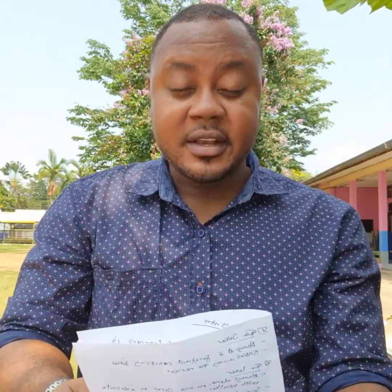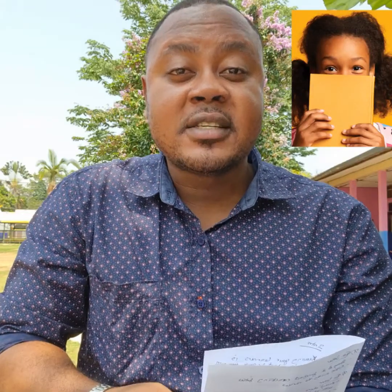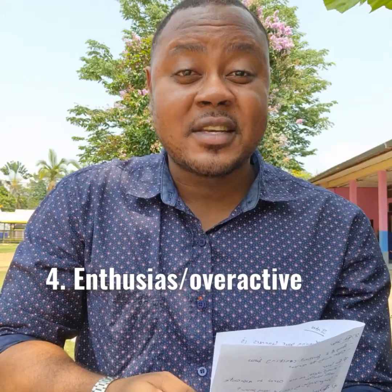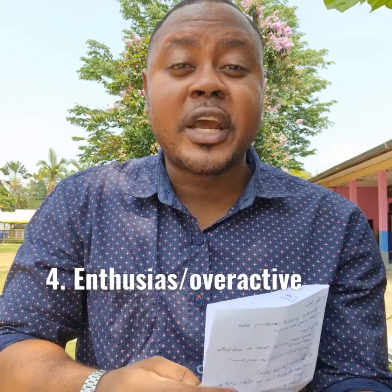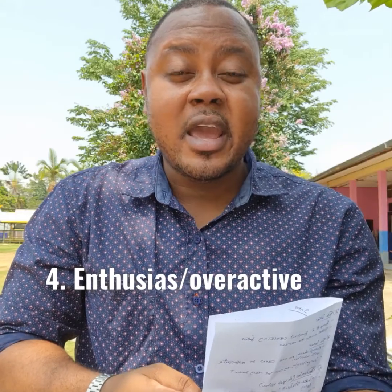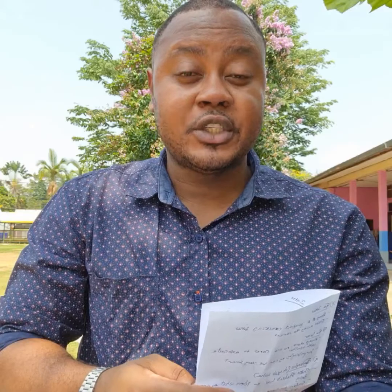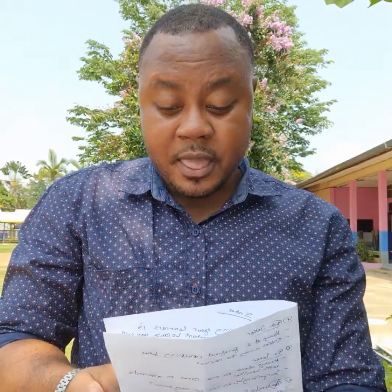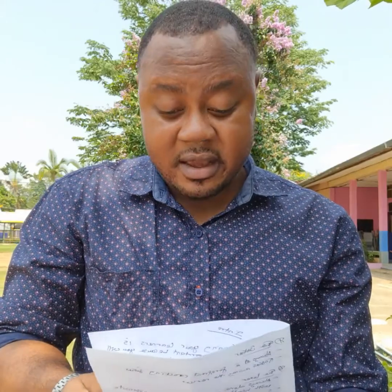The next type of student in the classroom is the overactive one — they're overactive. This kind of student has huge enthusiasm to learn, so they are able to do things way out of expectation. They go the extra mile to make sure whatever they do is right, partly because they want to please the teacher, and partly because they want to feel satisfied that what they've done is quite good.